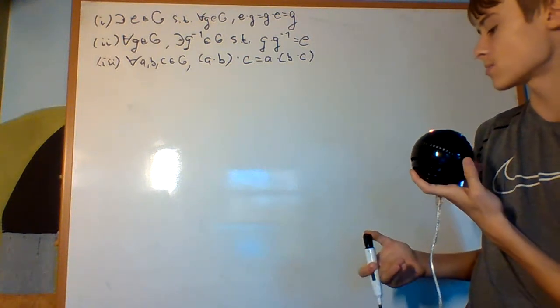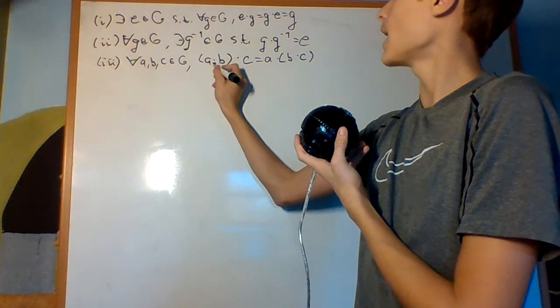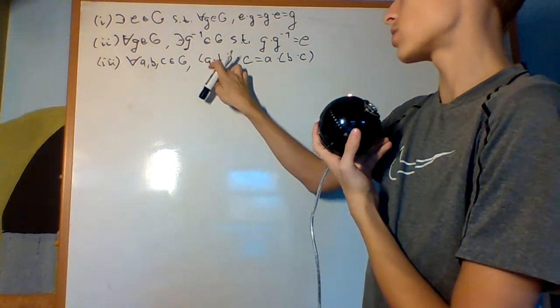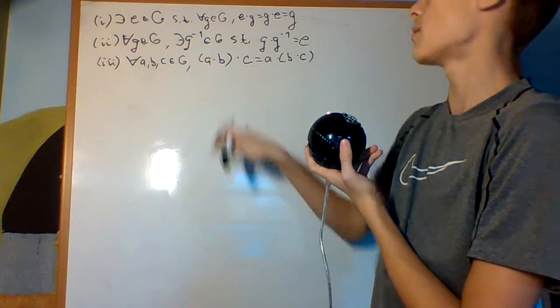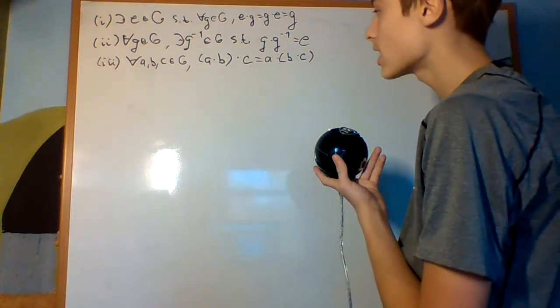So, what does this multiplication mean? In the example of a triangle, it means composing two different symmetries, I guess you'd say.